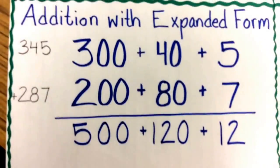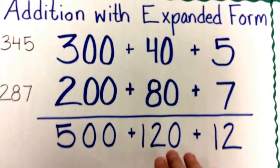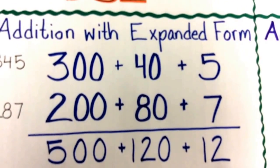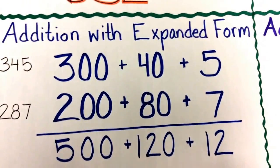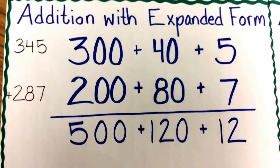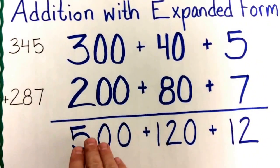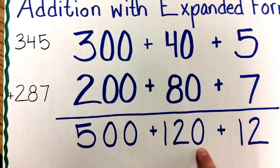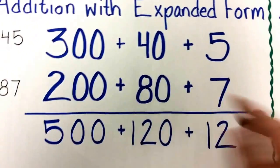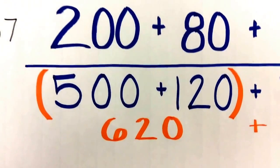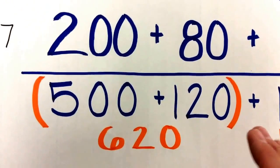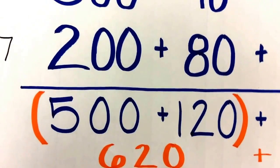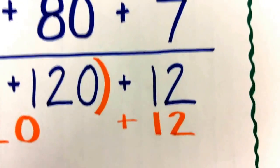So now I have this problem: 500 plus 120 plus 12. I know that I could use one of my math addition properties — I'll use the associative property, which means I could start with adding just two of these addends. I'll add 500 plus 120 and worry about the rest later. Using the associative property, I added 500 plus 120 first to get 620. But my entire addition problem is not over yet — I still need to add in the 12.